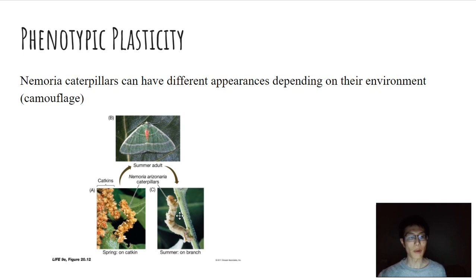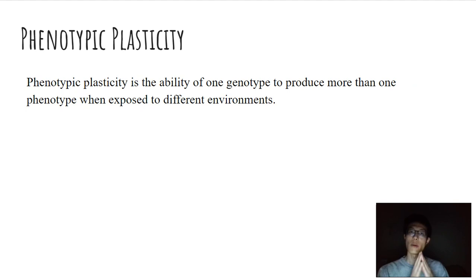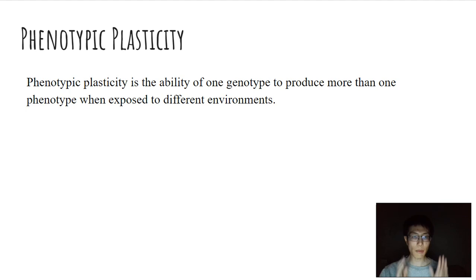So once again, we're going back to the concept of phenotypic plasticity, where one organism with one genotype has the ability to produce more than one phenotype when exposed to different environments. This is often through different regulations of macromolecules such as proteins and other broadly related processes. For the scope of the course, just know that phenotypic plasticity is the ability of one genotype to produce more than one phenotype when exposed to different environments, and get to know some examples where that is the case.